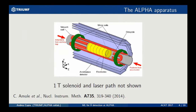The ALPHA experiment is located at the CERN anti-particle decelerator, sketched here. We have a detector stack which traps the antiprotons and positrons to make anti-hydrogen. In green and red are the superconducting magnets used to trap anti-hydrogen. These boxes here are the anti-hydrogen detector. What I'm not showing here for simplicity is the external solenoid, about one Tesla, used to trap the charged particles.